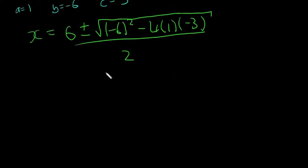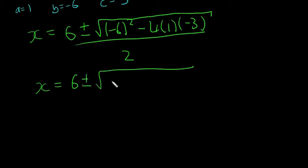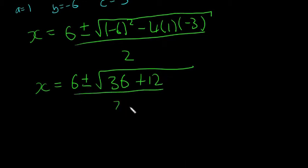That means X equals 6 plus or minus the square root of 36 — because minus 6 squared is still 36 — plus 12, because negative 4 times minus 3 gives positive 12. So we have 6 plus or minus the square root of 48, all divided by 2.